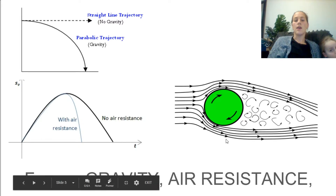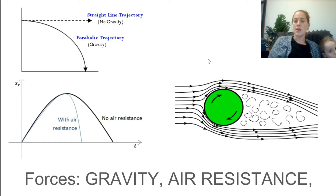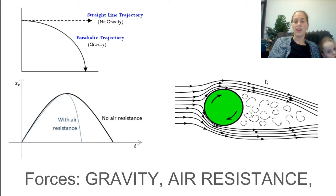Spin on the ball creates a Magnus effect, changing the path of the ball in the air so it can bend.